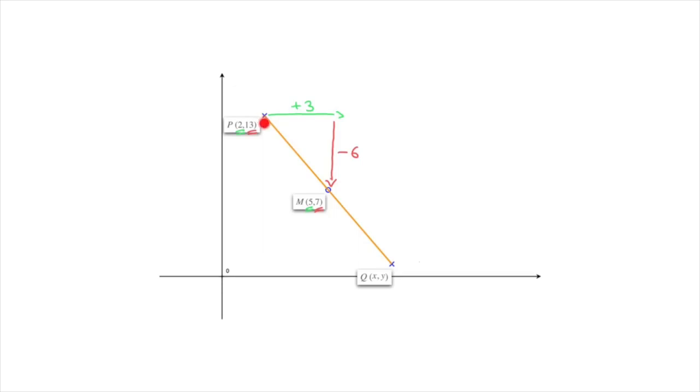So, to get from P to M, we would have to move 3 units to the right and 6 units downwards. But now, since M is the midpoint of the line segment, to get from the midpoint M to the endpoint Q, which is the point we're looking for, we're going to have to follow exactly the same steps.